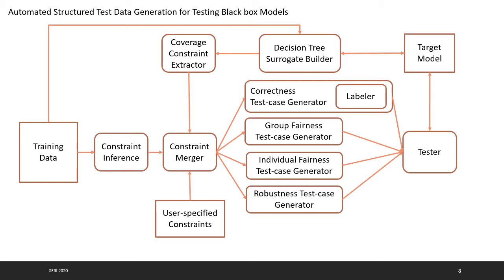Here is the entire framework for structured data test case generation for testing black box models. We start with the training data and infer its constraints — the statistical distributions of different columns and the association relationships between columns. This essentially summarizes the characteristics of the training data. We then give these constraints to a constraint solver, which can generate test cases for different properties. For realistic test case generation, the constraint solver uses the distribution properties from the training data to generate similar test cases.